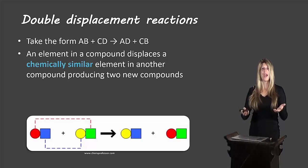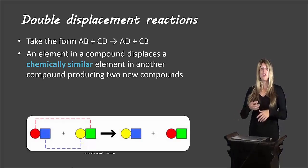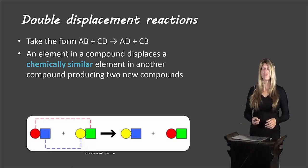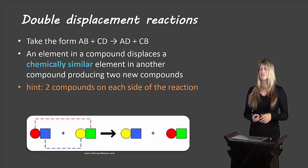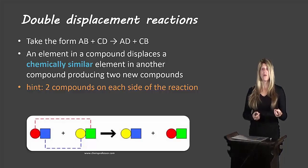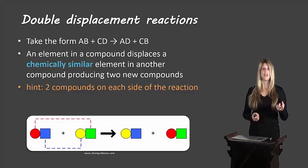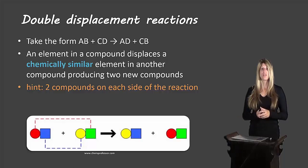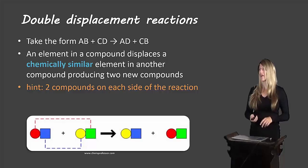Chemically similar would be two cations, two anions, two metals, two non-metals — but never a metal for a non-metal, for example. A hint to identify these reactions is that you have two compounds on each side. If there's only one compound, you're not dealing with a double displacement reaction. You need two compounds on each side.